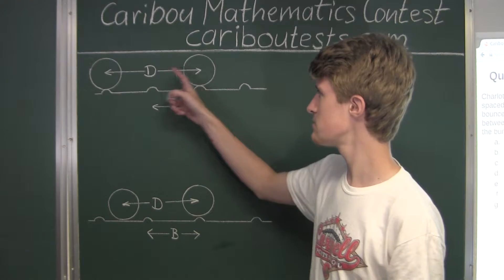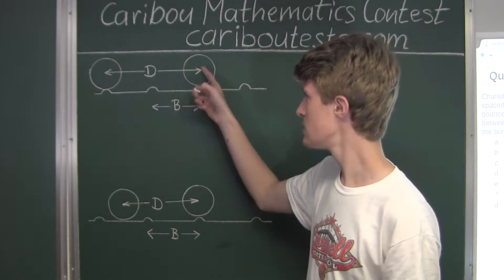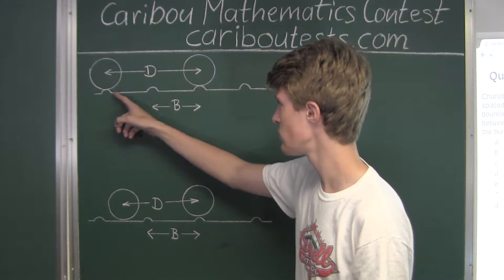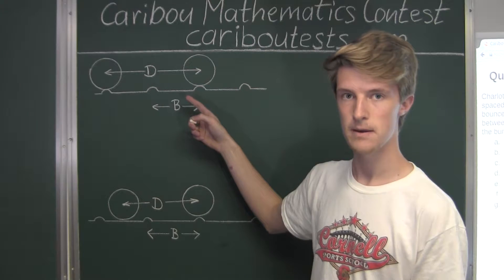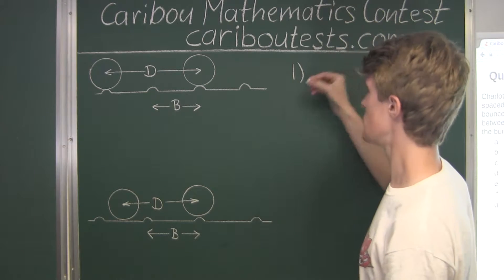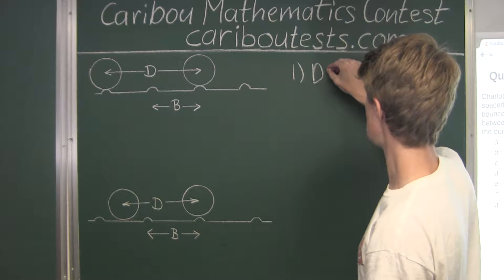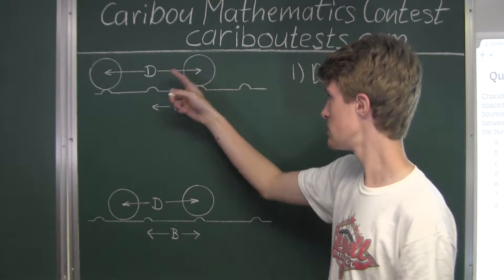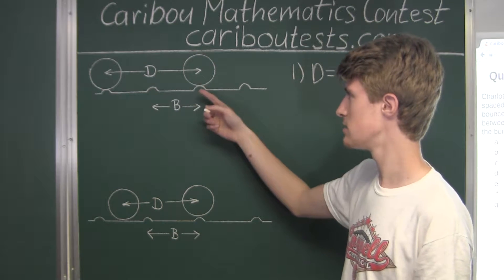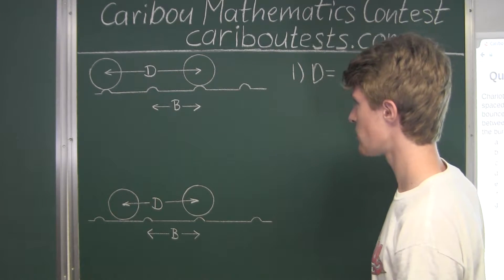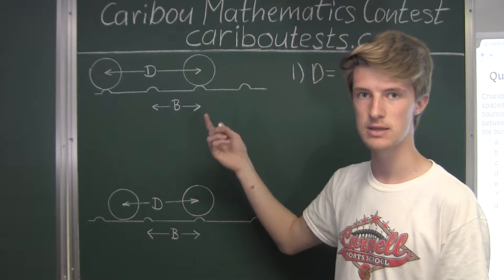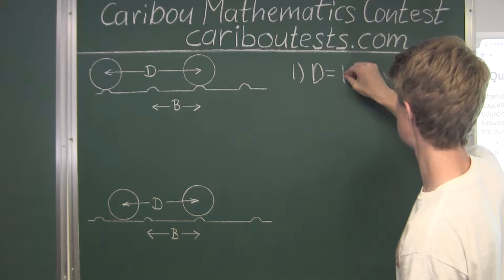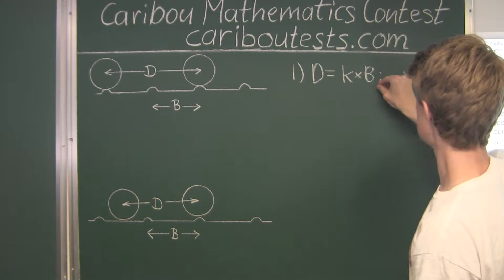Now let's investigate the first case. We can see that the distance between the front and back tires, D, is actually a multiple of B. Here in this picture, D is equal to 2B because we have one distance of B and then another B. But the back tire could also be on top of the very next bump so there are no bumps in between the two tires, and that would just be D equals B. Of course, the front tire could be much further ahead with many bumps in between, so we can have any positive integer multiple of B, which we will call K. So we have D equals K times B.